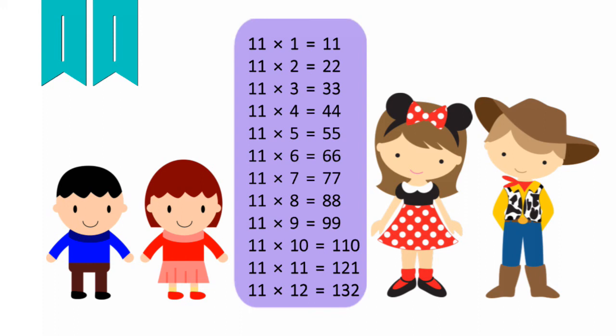11 times 1 equals 11, 11 times 2 equals 22, 11 times 3 equals 33, 11 times 4 equals 44, 11 times 5 equals 55, 11 times 6 equals 66, 11 times 7 equals 77, 11 times 8 equals 88, 11 times 9 equals 99, 11 times 10 equals 110, 11 times 11 equals 121, 11 times 12 equals 132.